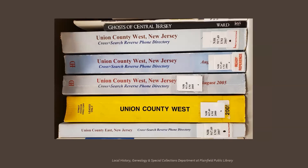We can read the spines of these five books, much more recent than the library's city directories. These books are commonly known as crisscross directories. In them, you look up either a phone number or an address to learn the name of the person associated with it. If you wanted to know who was living in the Cedar Croft Apartments in 2000, this yellow book could help, although only the head of each household is identified. It's not quite the same as a city directory, but might be very useful in the right situation.